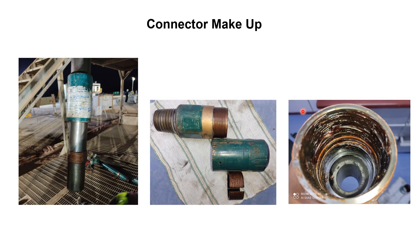Here we will see the summarized procedure for the connector makeup. The slip type connector is the easiest to make up compared to other connectors. First, we make the end of the CT string ready by smoothing it with a file. Then we insert the top sub onto the CT string, followed by the slips — keeping in mind the direction so that the wedges grip the CT string when tension is applied. The exposed CT length must match the internal length of the bottom sub, then we insert the bottom sub and tie the top sub to the bottom sub to complete the external slip connector.